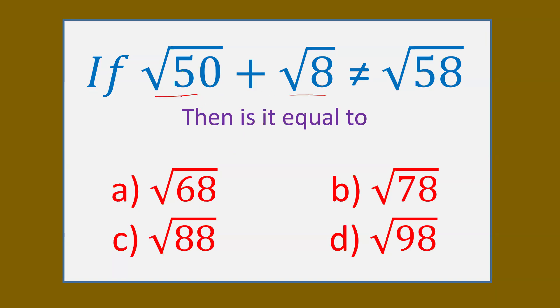Here the surds are given as under root 50 plus under root 8. Is it equal to root 58? Definitely not, as I have explained over here. Then what is root 50 plus root 8 — is it 68, 78, 88, or 98?